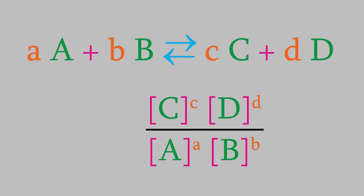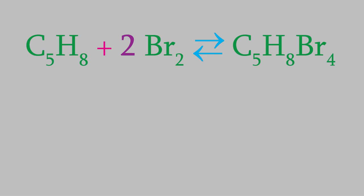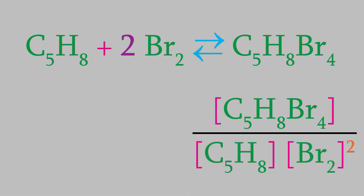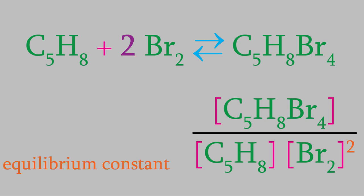So for example, think about this reaction. The product concentration goes in the numerator, and the two reactants go in the denominator. Notice that the balanced reaction shows that bromine has a coefficient of 2, so the concentration of bromine in the denominator has an exponent of 2. We call this kind of ratio the equilibrium constant, and it has the symbol K — notice that this is a capital K, not a lowercase k like the rate law constant we used in the last few videos.